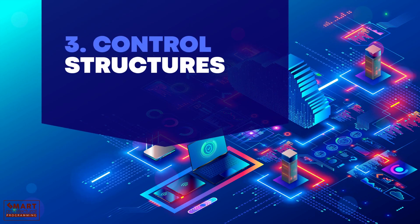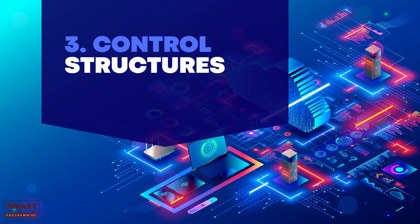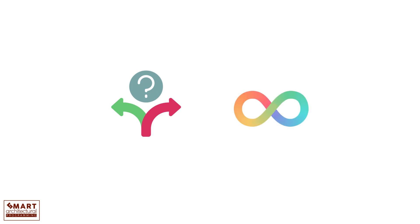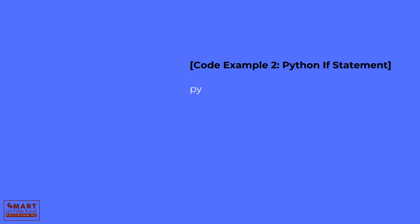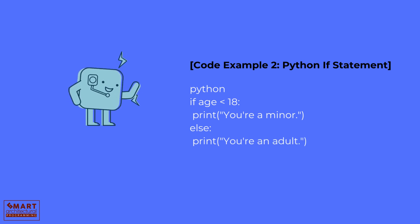To make our program smart, we use control structures. These include conditions, if statements, and loops — for and while loops. They help our programs make decisions and repeat tasks. In Python: if age is less than 18, print "you're a minor", else print "you're an adult". We use an if statement to check the age variable and print a message based on the condition.